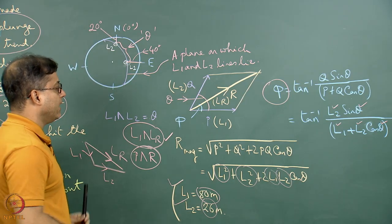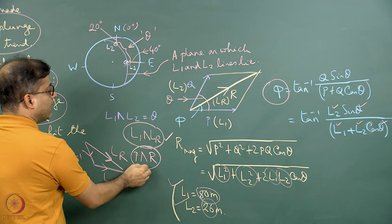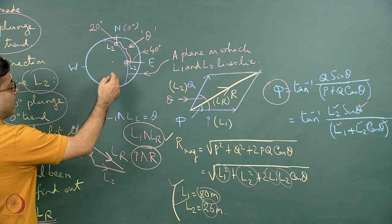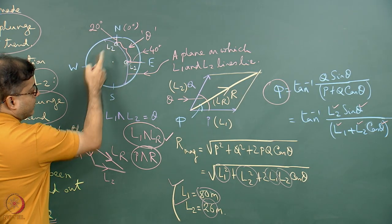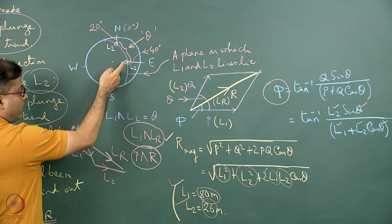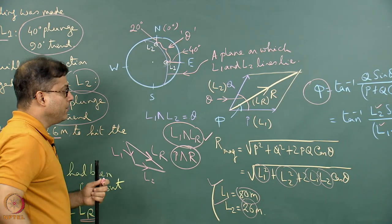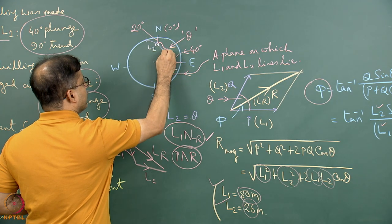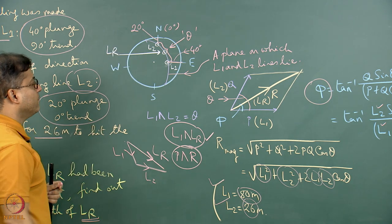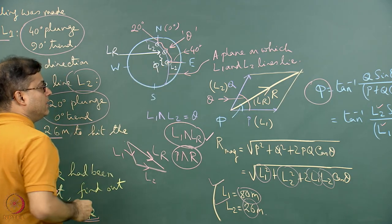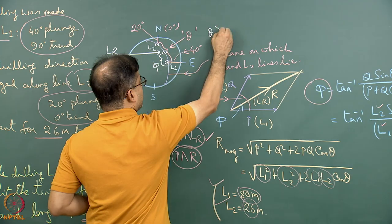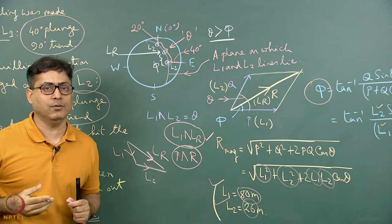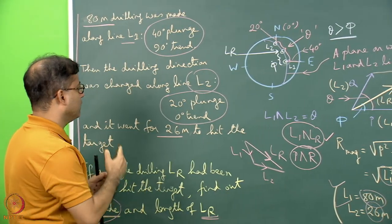As per the diagram, phi is the angle between P (L1) and R (Lr). Once phi is found, it is plotted from the L1 point toward L2 along the great circle on the stereonet to locate the Lr point. This angle phi is less than theta, as expected. Once the Lr point is plotted, we can read off its plunge and trend by standard stereonet procedure, giving the full attitude of the Lr line.